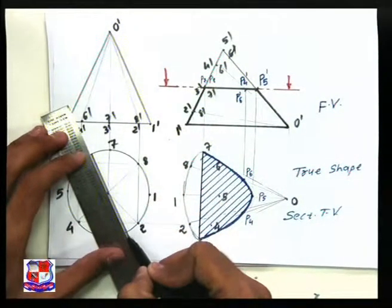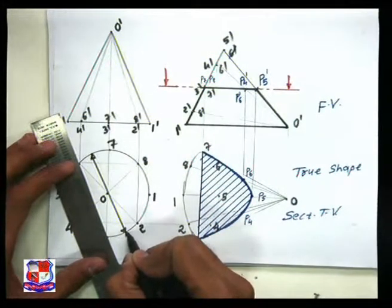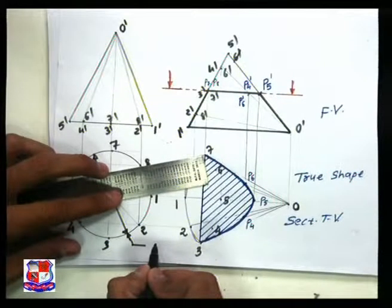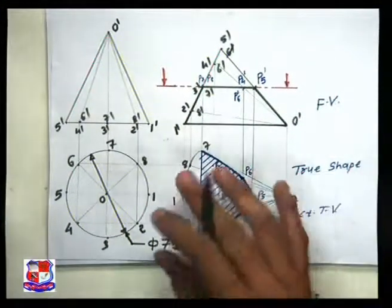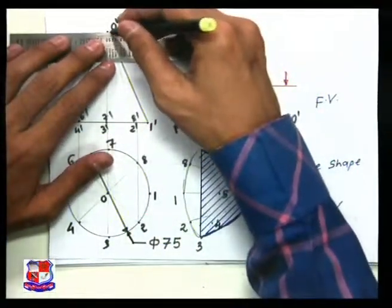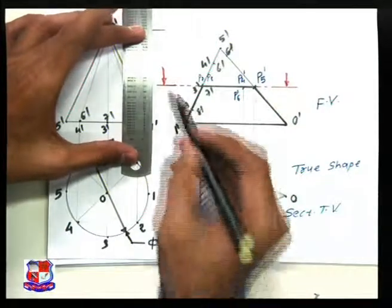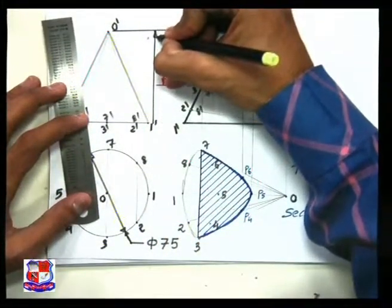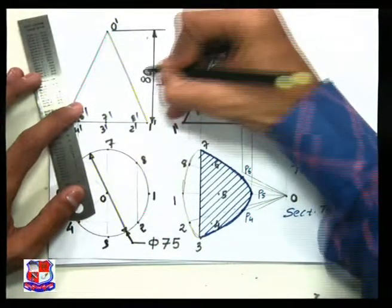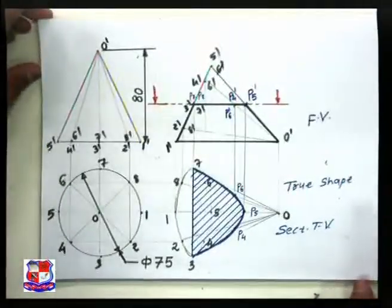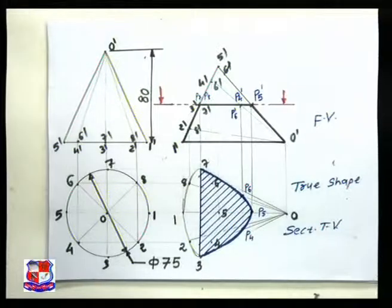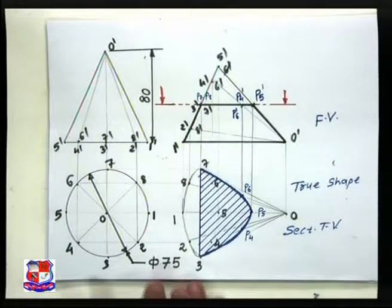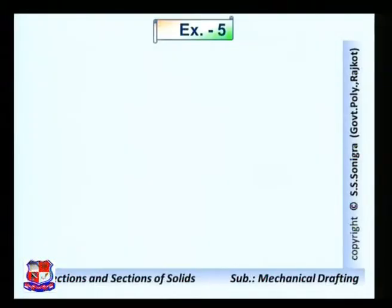Insert the dimension with standard nomenclature. This is the diameter, so the diameter symbol should be written — the diameter of this cone is 75 millimeters. For a full circle, the dimension of diameter should be inserted; if it is an arc, use radius. Height is 80 millimeters. The aligned system of dimensioning is used in small drawings; for large drawings, use the unidirectional dimensioning system. This concludes the solution of problem number 4.